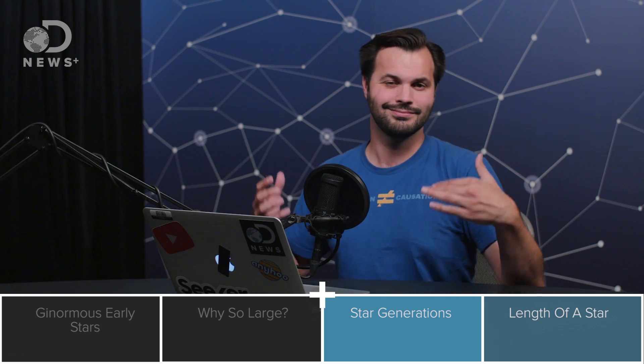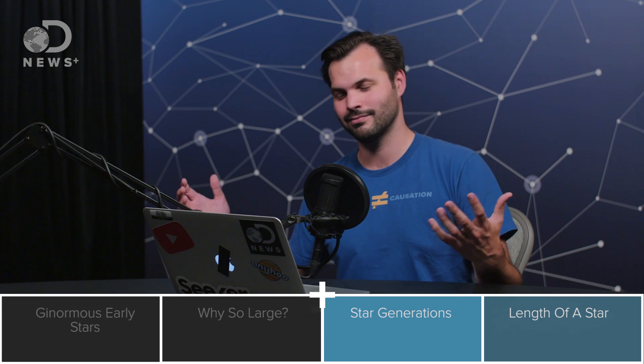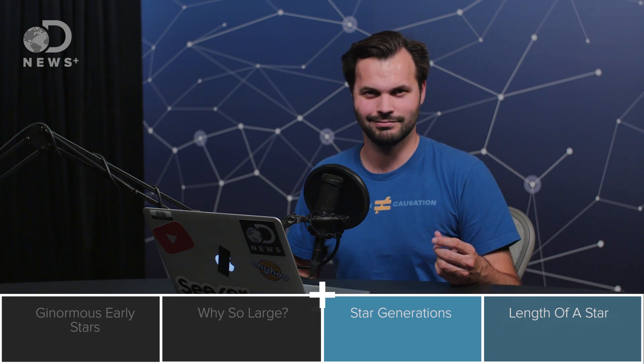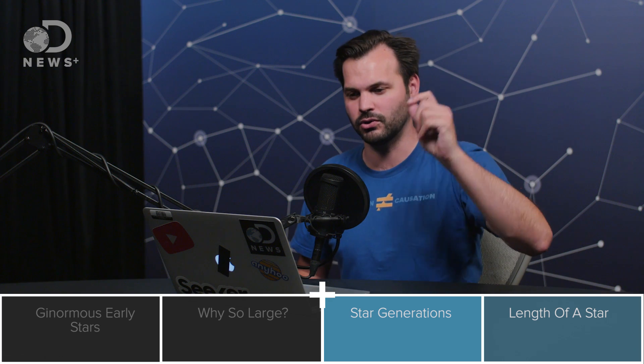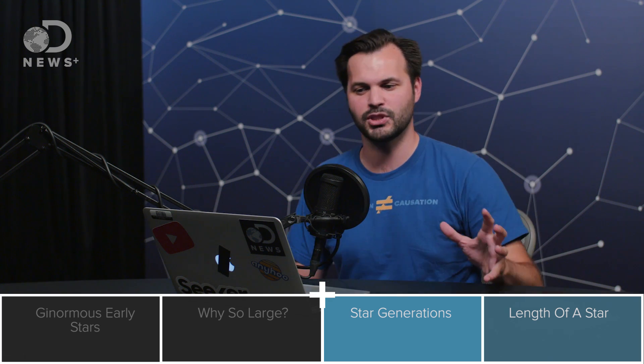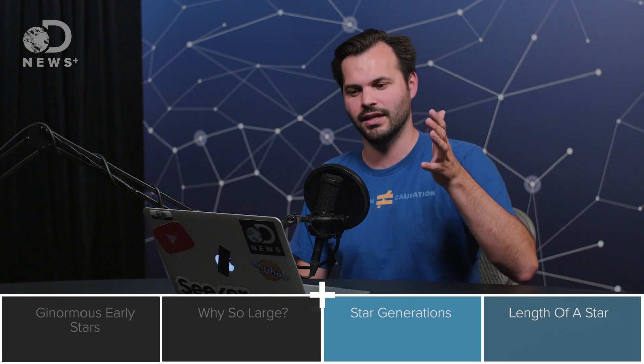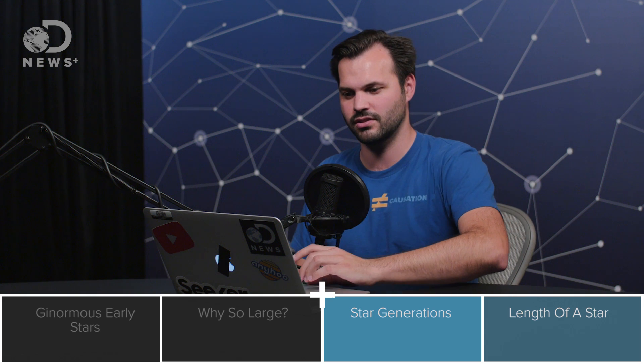Eventually those stars became stable, they lasted longer, got into middle age, bought a minivan, kind of calmed down a bit. So that's population three stars, rock and roll stars. They didn't have very much metal, ironically, and they were the oldest. They were the first stars.